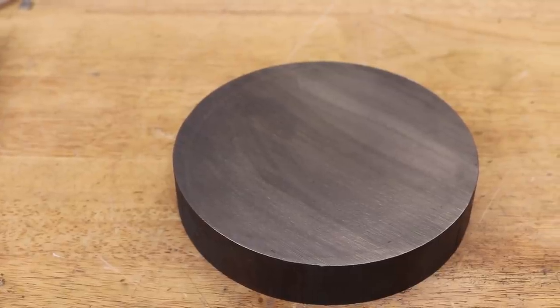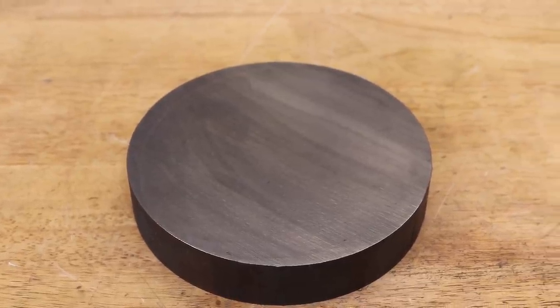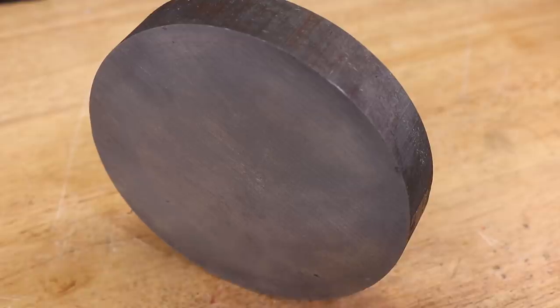Not only does it provide a lot of mass for the base, but it should dampen vibrations when in use. The faces are in pretty rough shape, so they will need a facing cut on the mill.